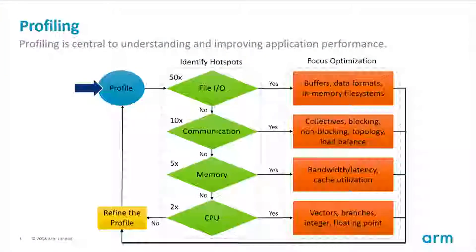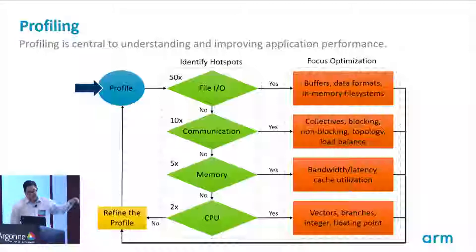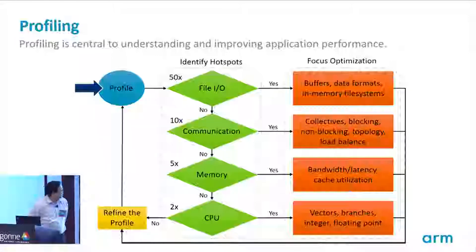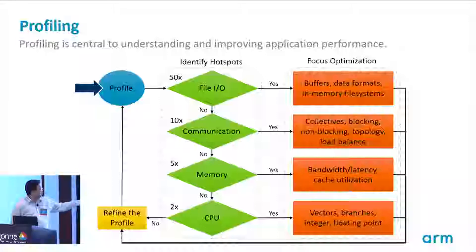On the other side of debugging, now that you've fixed your code, you want to make sure it gives you the answer in a reasonable amount of time. You want to get the most performance out of your code. We've got a flow chart of things to identify when profiling: at the top, file I/O — focusing on buffers, data formats, and memory file systems — then communication, memory, and CPU.